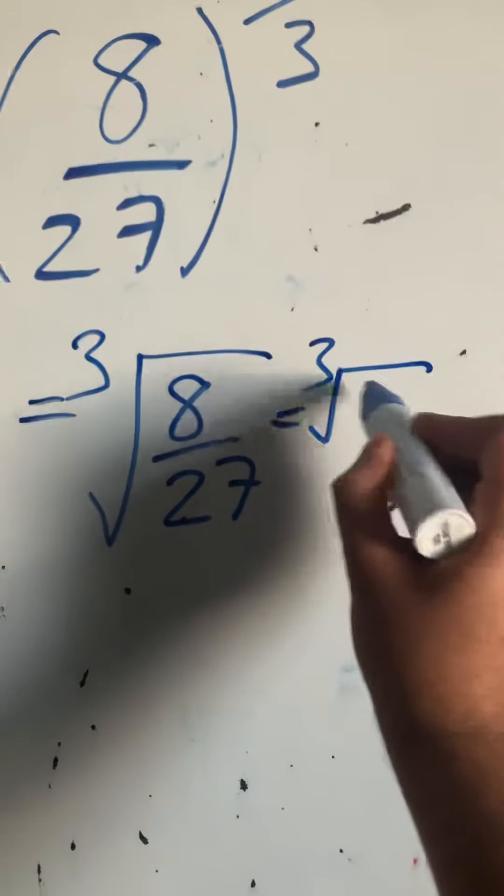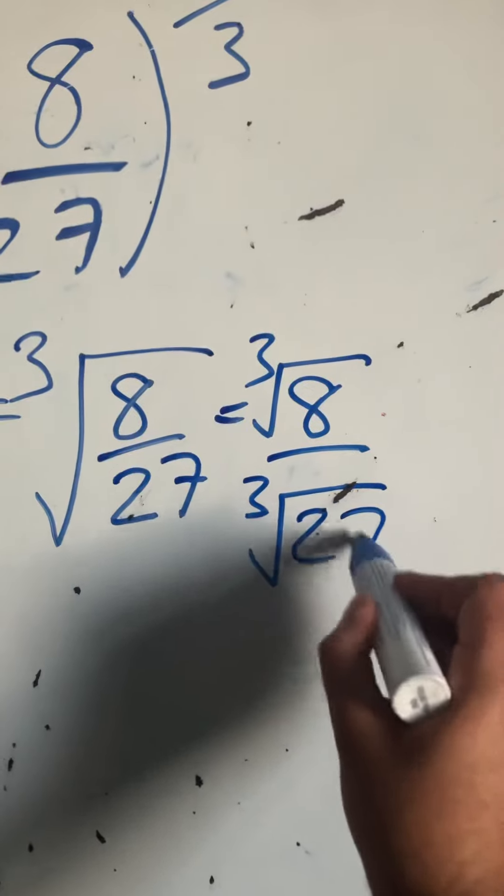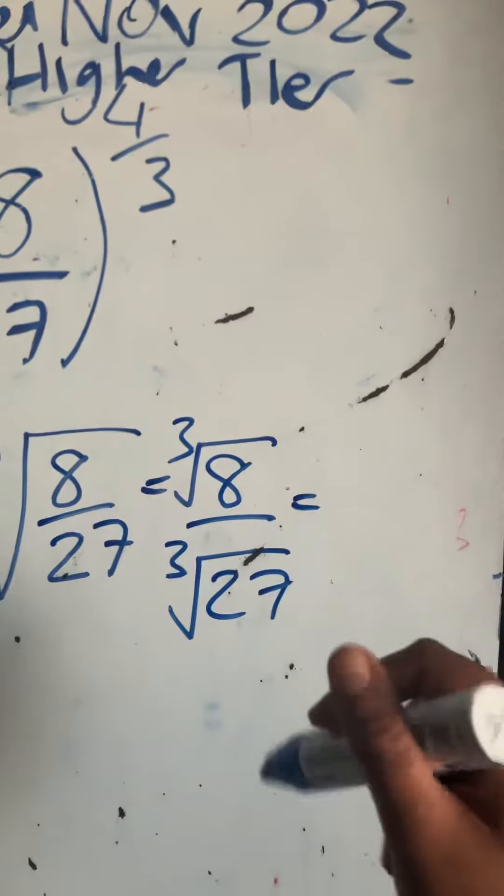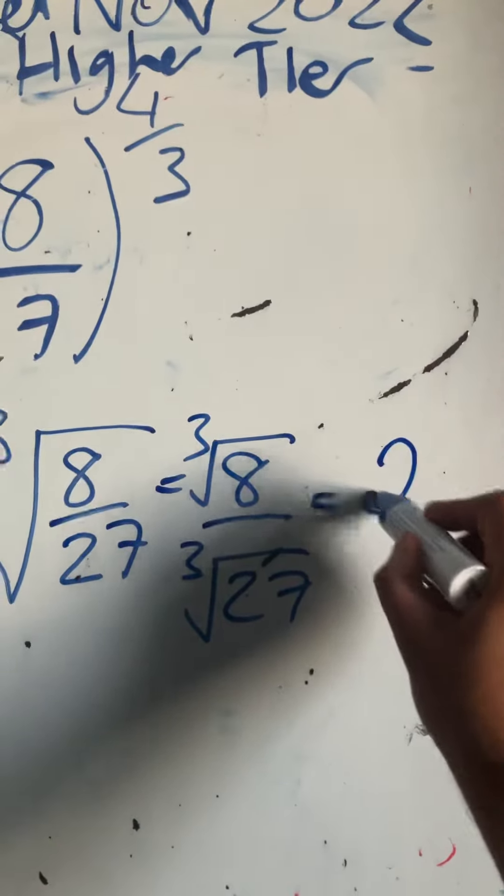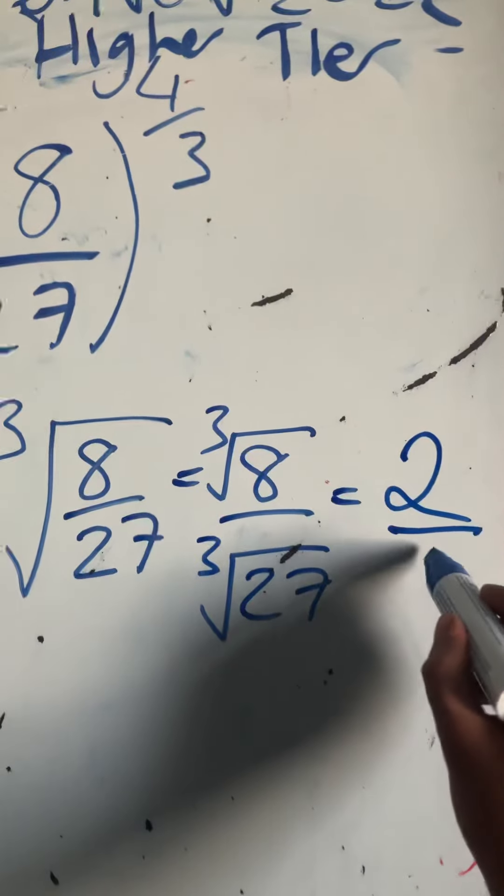...to be the cube root of 8 over the cube root of 27. The cube root of 8 is 2 because 2×2×2 = 8, and the cube root of 27 is 3. So I get 2/3.